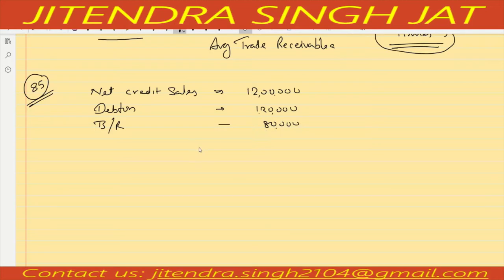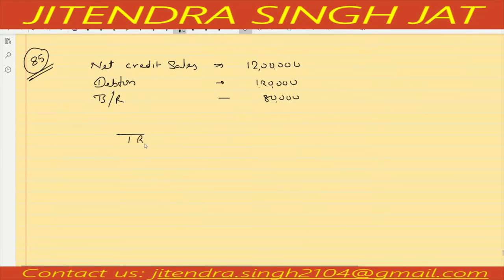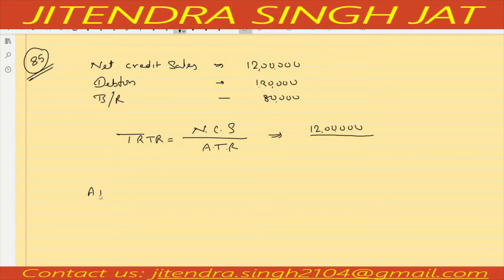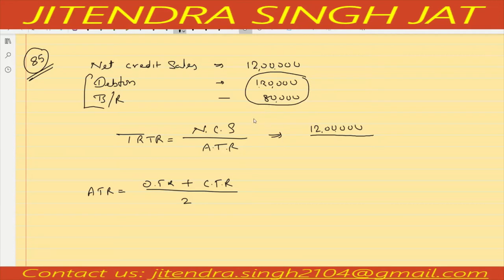The formula of trade receivable turnover ratio is net credit sales upon average trade receivable. Net credit sales is given directly as 12 lakh. Average trade receivable is normally calculated as opening plus closing divided by 2. But in this question opening and closing are not given separately — only debtor and bills receivable are mentioned. So we will consider it as closing trade receivable.